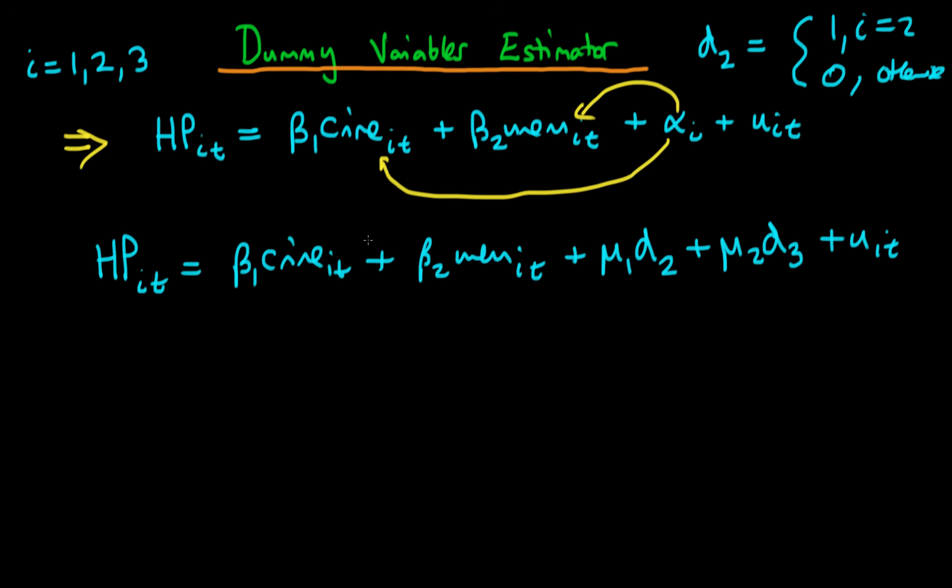Okay so this is our new equation for house prices. So how does this particular specification help? Well the reason it helps is because essentially by including these dummy variables we are allowing each different city to have a different value of an intercept. In other words we're allowing each city to have a different value of this unobserved heterogeneity. So by explicitly including these dummy variables we are explicitly taking account of this unobserved heterogeneity.